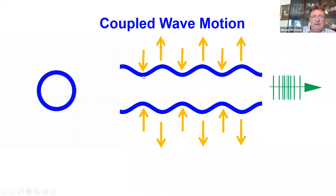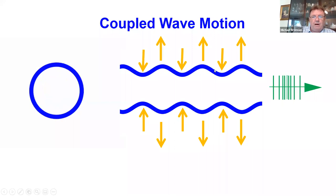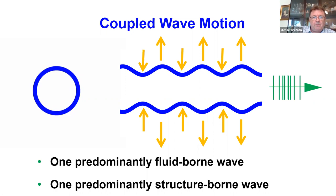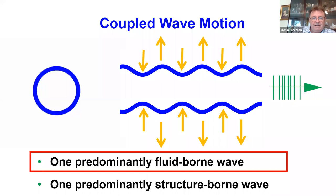That generates a wave which propagates along the pipe with quite strong radial motion. Because we have two media — the water and the pipe wall — you still get two waves, but now they are coupled together. What we call the predominantly fluid-borne wave has most of its energy in the fluid but is well coupled to the pipe wall. The other wave is predominantly structure-borne, with energy mainly in the pipe wall.